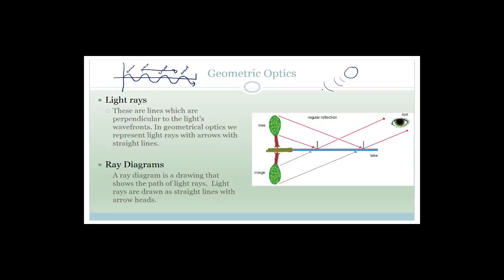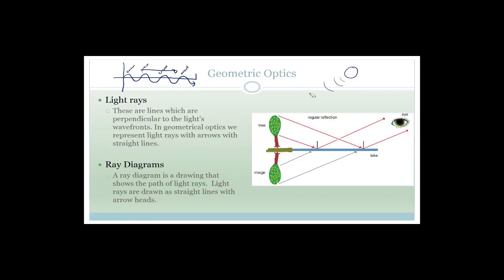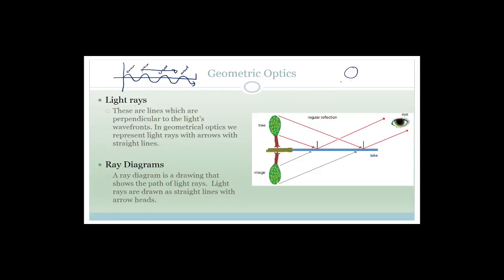In geometric optics we represent light rays with arrows — straight lines with arrow heads. If the sun is giving off light rays in all directions, we can't possibly draw a 3D wave, so we draw arrows to show that the light is being given off in all directions. Ray diagrams are drawings that show the path of light rays, drawn as straight lines with arrowheads.